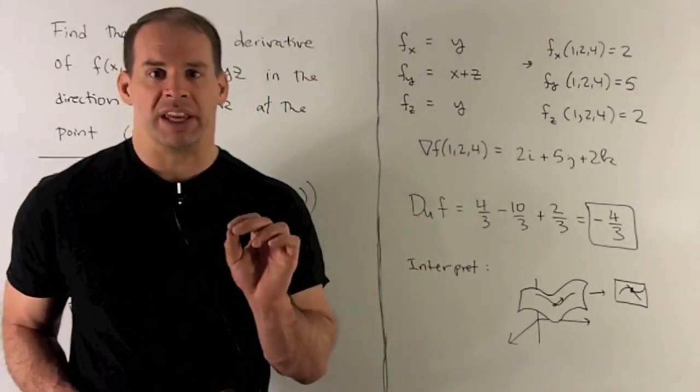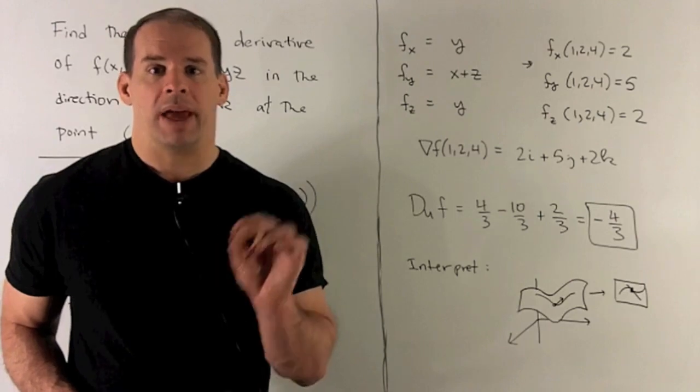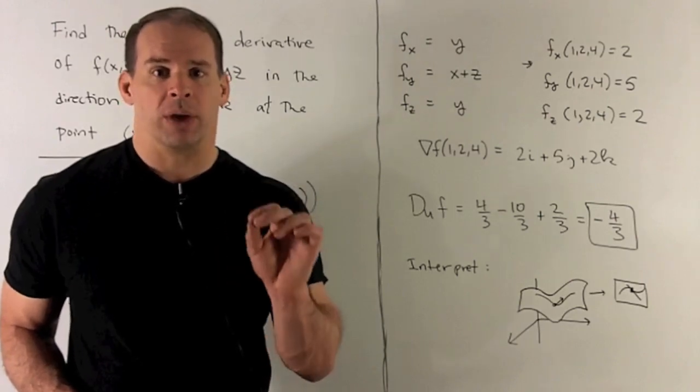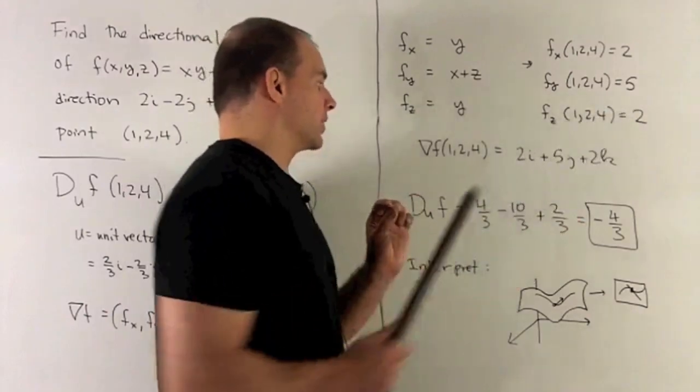And then partial with respect to z, z is our variable, x and y are constants. So we get a y, so again a 2 comes out.